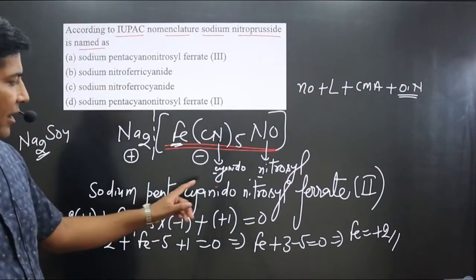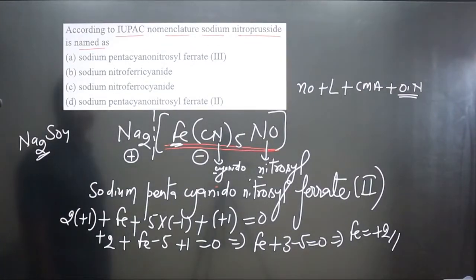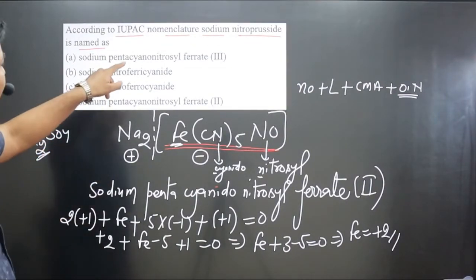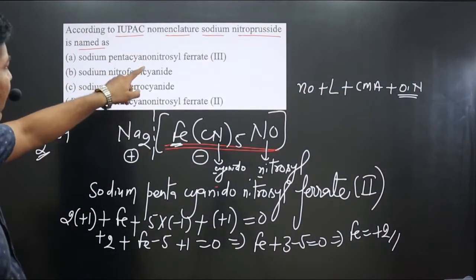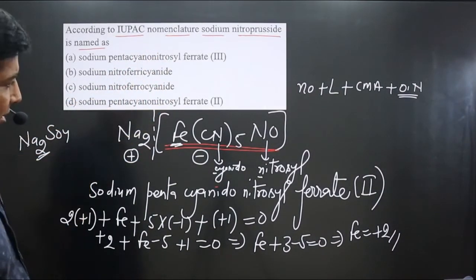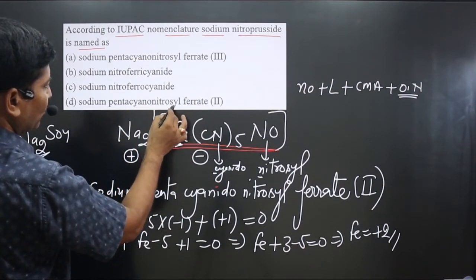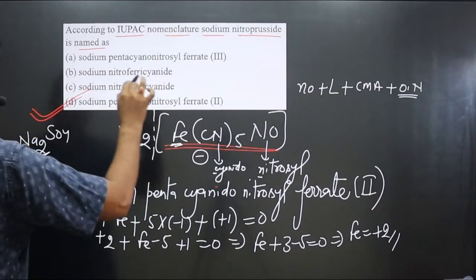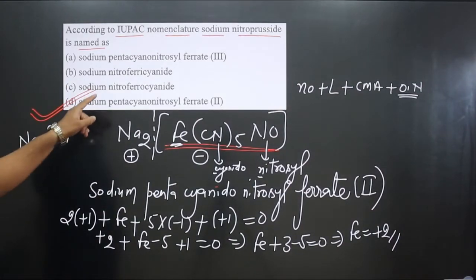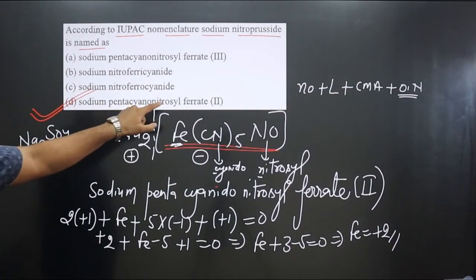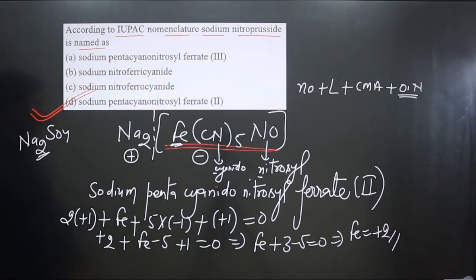The final IUPAC name is sodium pentacyanido nitrosyl ferrate(II). Checking the options, the correct answer is sodium pentacyanido nitrosyl ferrate(II), confirming that the oxidation number of the central metal atom iron is +2. This is the IUPAC name of sodium nitroprusside.